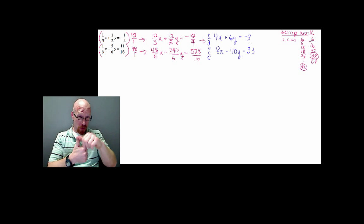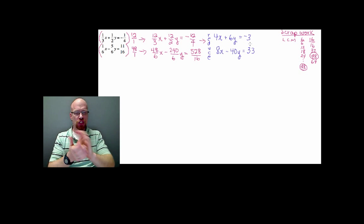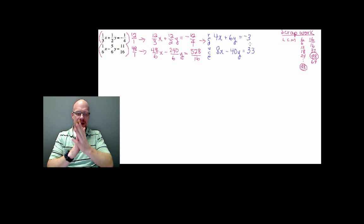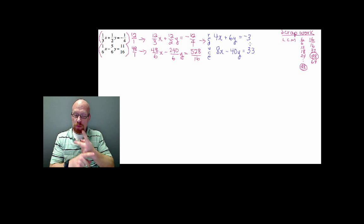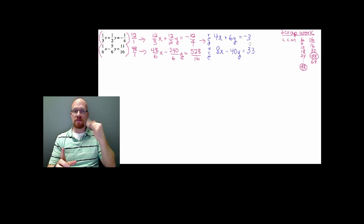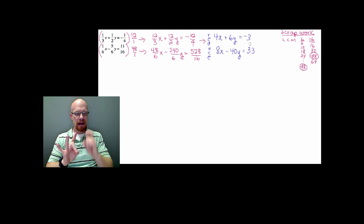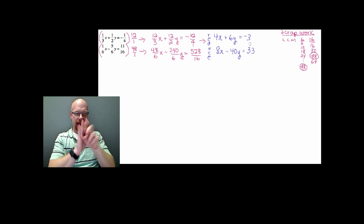Now we can work on eliminating either the x term or the y term from either of these equations. The goal is to have either 0x or 0y when you add them together. I'm looking at the x term because I have 4x and 8x. It would be relatively easy to have negative 8x and positive 8x. I'll work with the x terms to avoid potential mistakes.